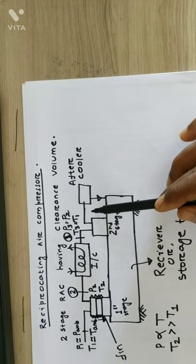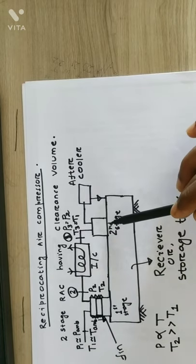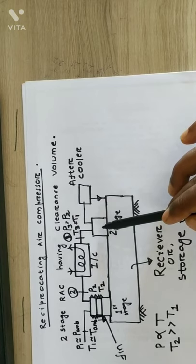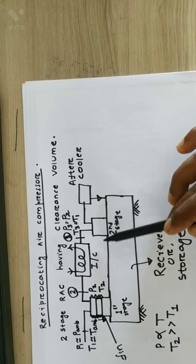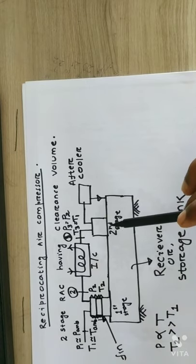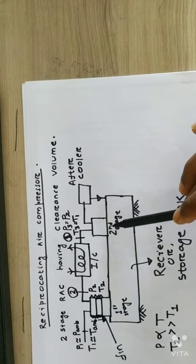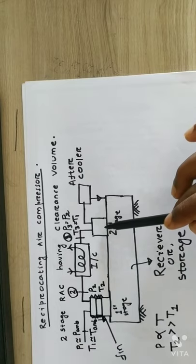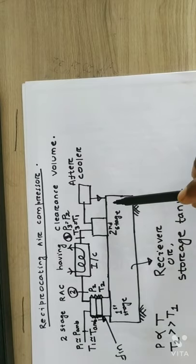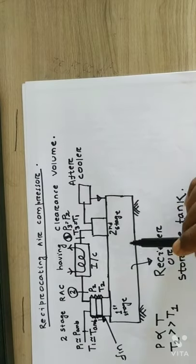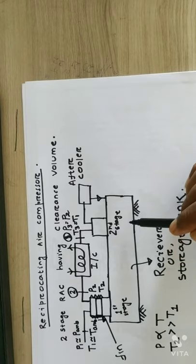The second stage compressor volume is less in comparison to the first stage compressor. During the compression stroke, the air will be compressed and delivered to the storage tank, where it will be stored.